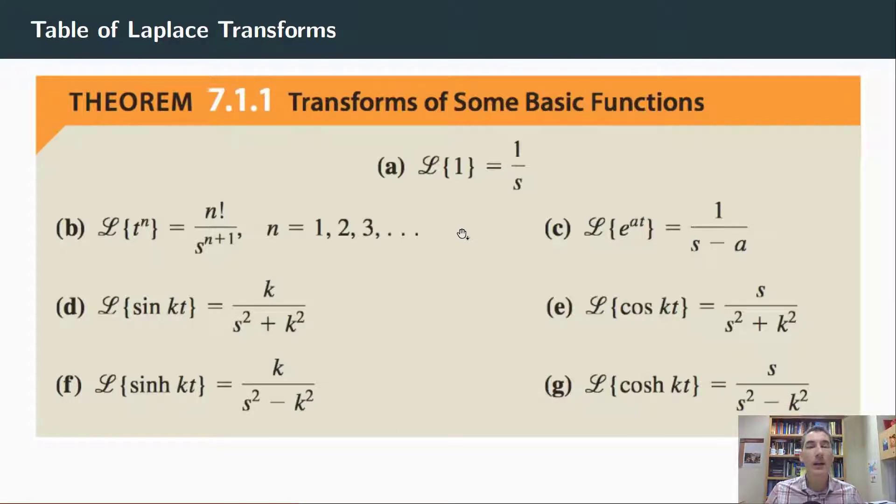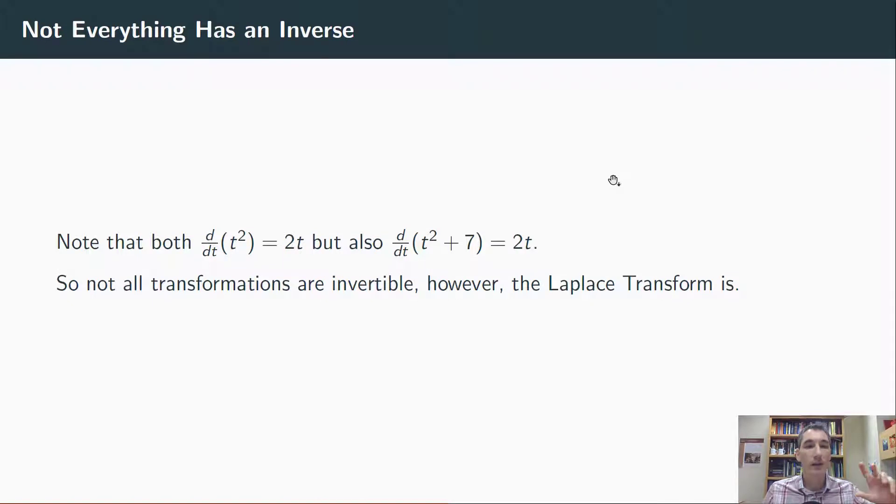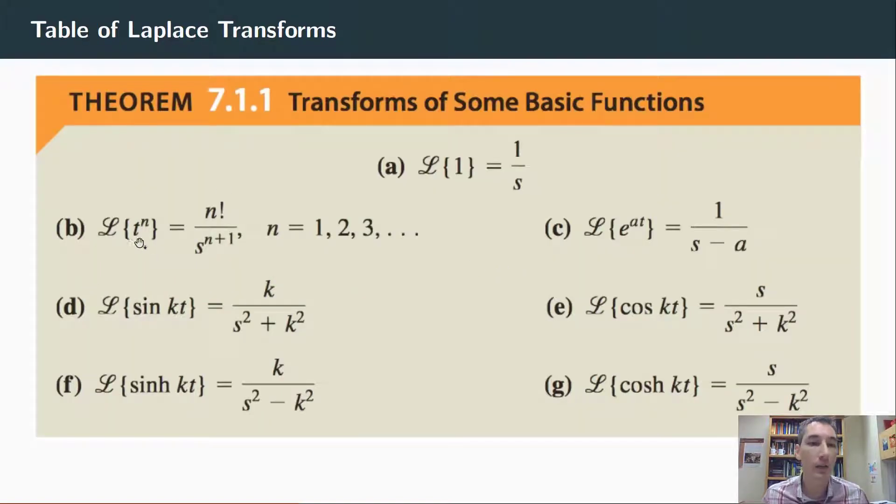So what's going to happen is we're going to try to go backwards from s back to t. Now you can't take for granted that this is possible. For example, with differentiation, the derivative of t squared is 2t, but the derivative of t squared plus 7 is also 2t. So you can take two different functions and they could have the same derivative. How do we know that couldn't happen with Laplace transform? How do we know that if we put t to the n in we'd get this, but t to the n plus 5 wouldn't also get this?